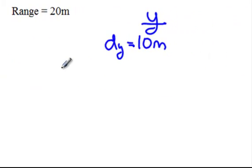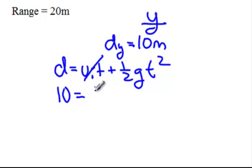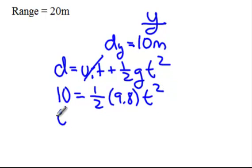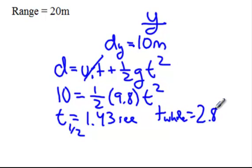I do have an equation in my y: displacement in y equals vi·t plus one-half g·t squared. In these full projectile motion problems, I'm going to look at just half of the time. So to find half of my time: my displacement in y is 10, my initial velocity is 0, and I have one-half times 9.8 times t squared. When I do that calculation, I find my time to be 1.43 seconds. But that is only half of the time, which means the full time in the air is double that — 2.86 seconds.